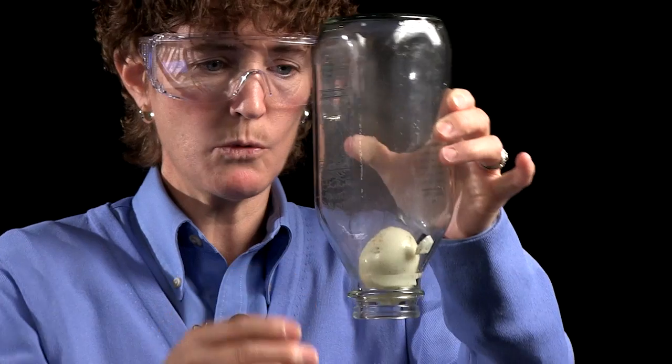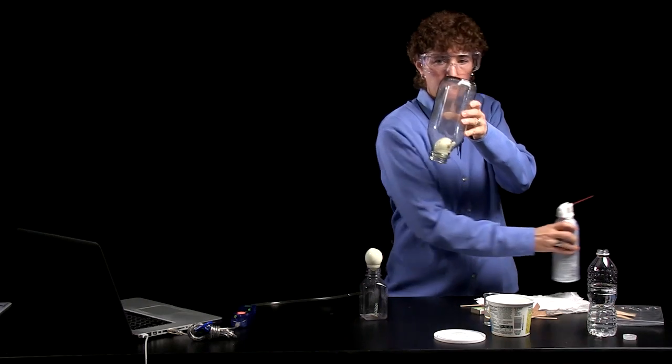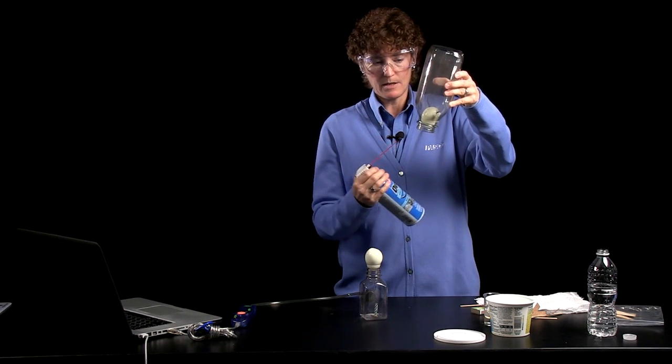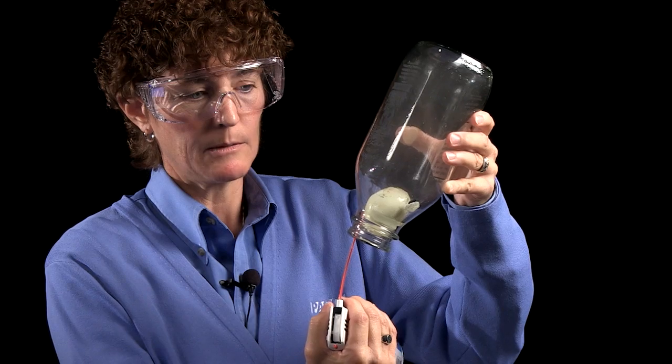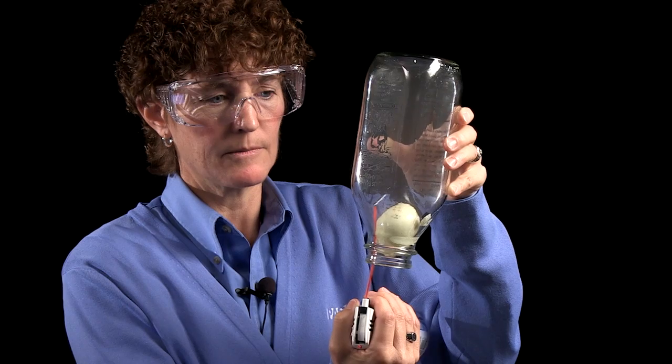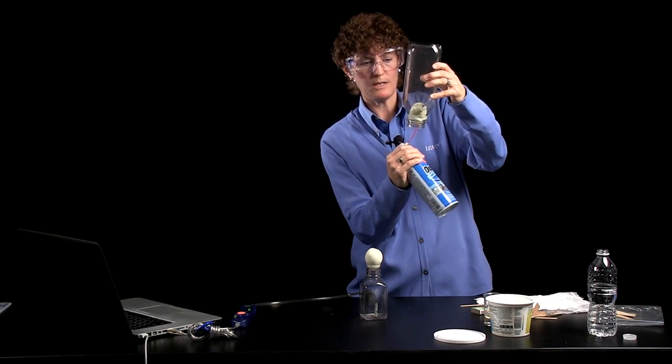It still doesn't want to come back out. It still clearly doesn't fit. But what I propose to do is to take a can of compressed air with the little straw tube on it and press that up in beyond the egg.